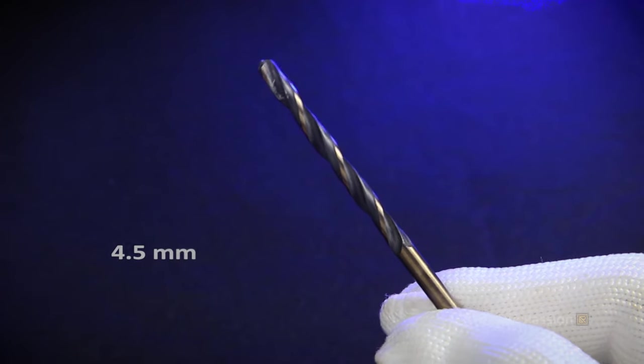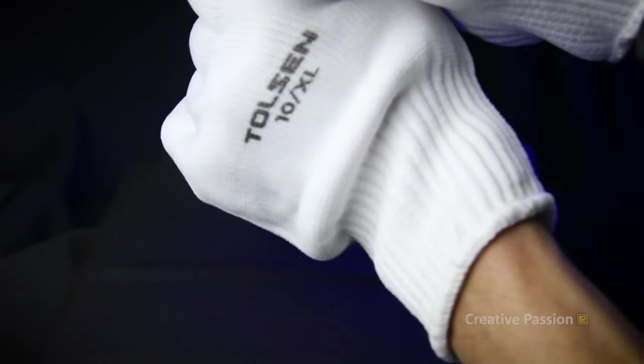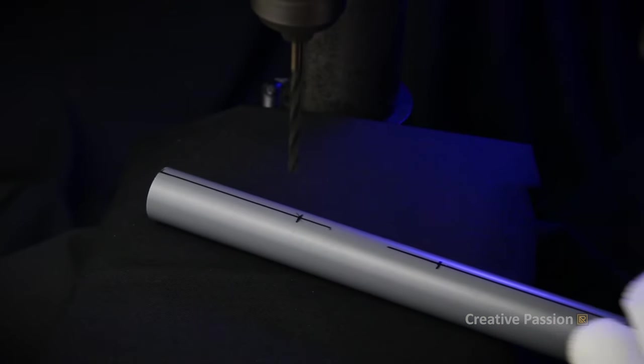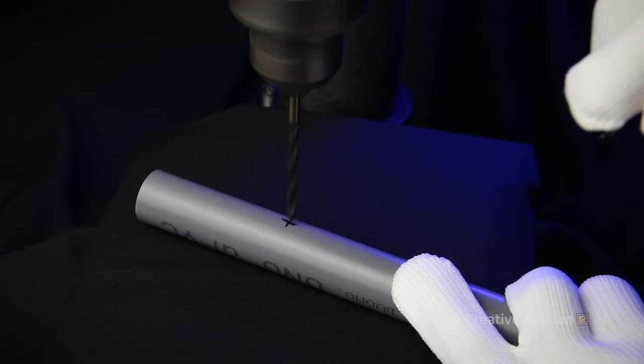Now we will proceed to drill holes. Here I will use a 4.5mm drill bit to drill pilot holes first. And to make it look more aesthetic, the D5 hole number 1 will be drilled facing downward.